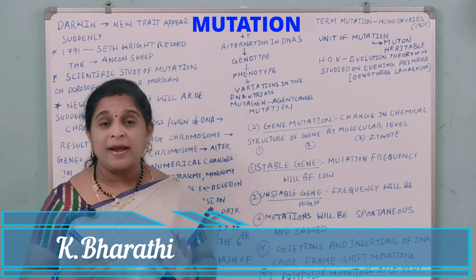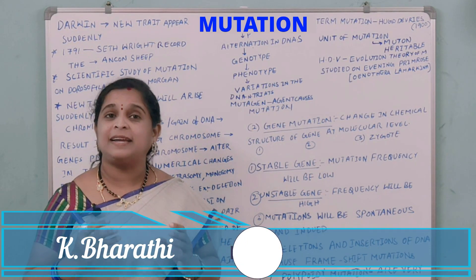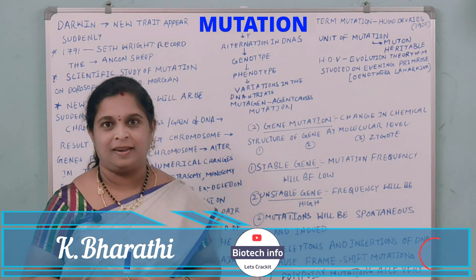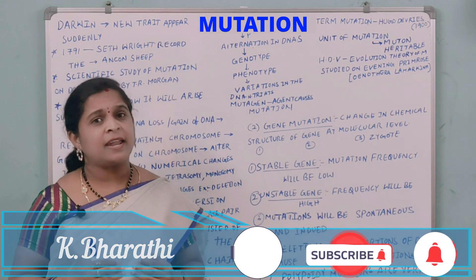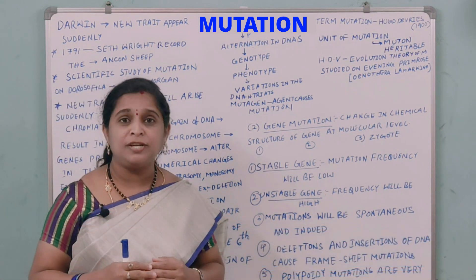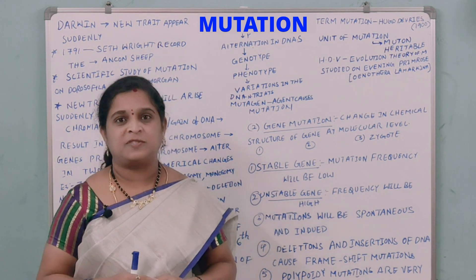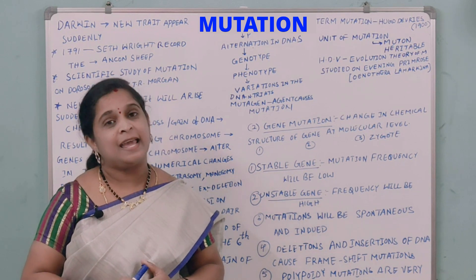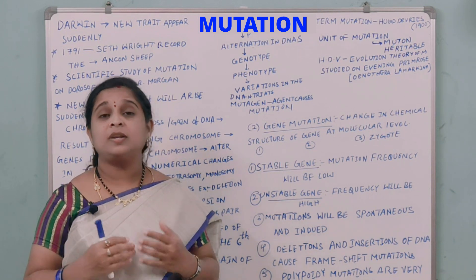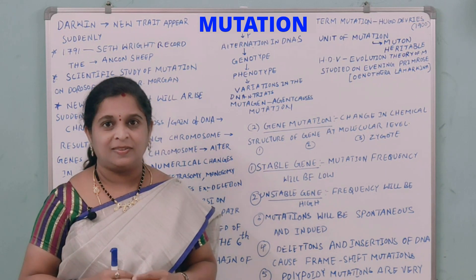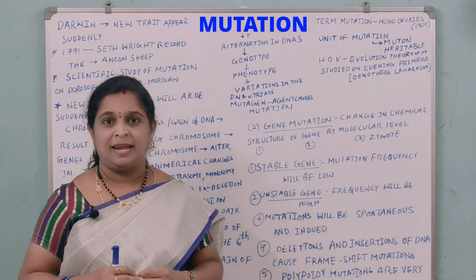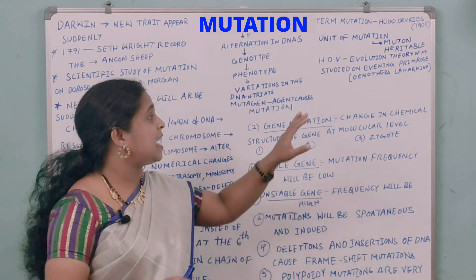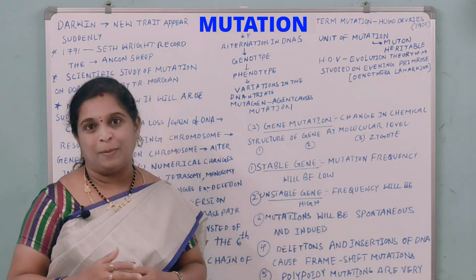The word mutation was coined by Hugo de Vries in 1900, and the unit of mutation is called a mutant. It is heritable, meaning the characters or traits which are transferred from parents to offspring — from parents to the next generation — is called heritable. Hugo de Vries worked on the mutation theory, an evolution theory on mutation. He did his work on a plant called evening primrose, otherwise known as Oenothera lamarckiana.